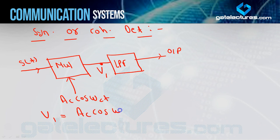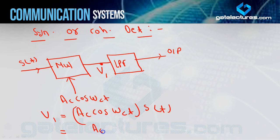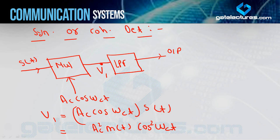Now if I take the multiplier output as V1, then V1 becomes AC·cos(ωCt) × S(t). We know that S(t) for a DSBSC signal is AC·m(t)·cos(ωCt) — that is the standard equation. So substituting S(t), V1 becomes AC²·m(t)·cos²(ωCt).